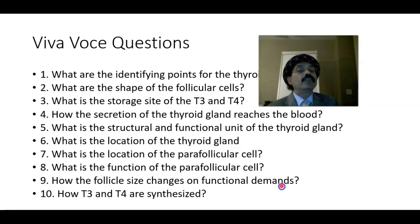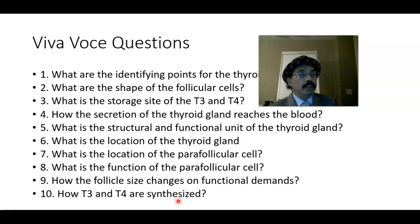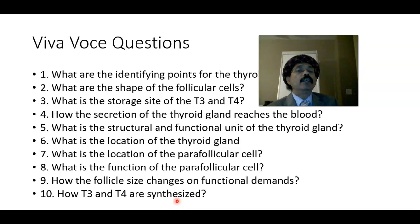T3 and T4 synthesis: The iodide pump brings iodide into the cell, which is converted to iodine released into the colloid. Thyroglobulin is produced by the rough ER, processed by the Golgi apparatus, and the tyrosine residues of thyroglobulin attach to iodine. MIT (monoiodothyronine) plus DIT (diiodothyronine) combine to form T3 (triiodothyronine); two DIT molecules combine to form T4 (thyroxine).